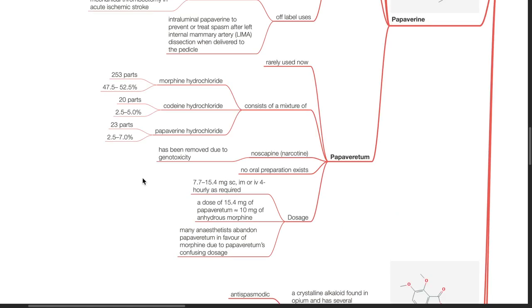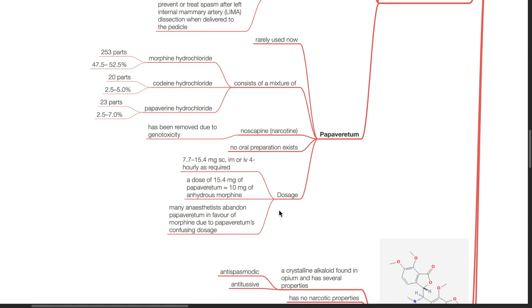Papaveretum is rarely used now. It consists of a mixture of morphine hydrochloride, codeine hydrochloride and papaverine hydrochloride. Noscapine has been removed due to genotoxicity. No oral preparation exists for papaveretum. Dosage. Many anesthetists has abandoned papaveretum in favour of morphine due to its confusing dosage. The dose is 7.7 to 15.4 mg subcutaneous IM or IV 4 hourly as required. A dose of 15.4 mg of papaveretum equates to 10 mg of anhydrous morphine.